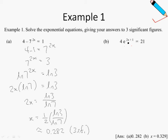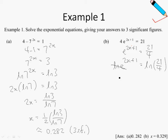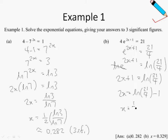Moving on. 4e to the power of 2x plus 1 equals 21. So e to the power of 2x plus 1 is just 21 divided by 4. To get rid of the exponential, take ln on both sides. This gives ln of 21 over 4. Realize that ln e cancels, so we have 2x plus 1 equals ln(21/4). Finally, 2x is ln(21/4) minus 1, and x is just half of that. Press this in the calculator, round it off, and you get the answer.